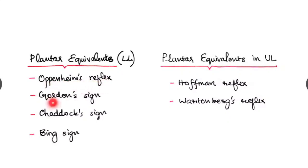They are Oppenheim's reflex, Gordon's sign, Chaddock's sign and Bing's sign. These signs you have to learn in detail. And the plantar equivalents in the upper limb also must be known. They are Hoffman reflex and Wartenberg reflex.